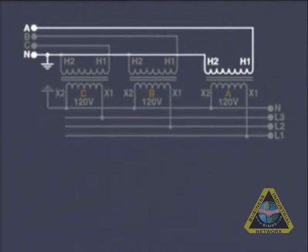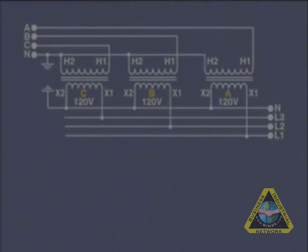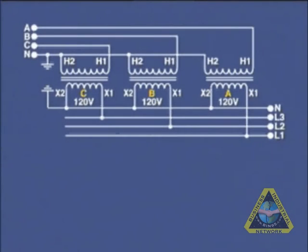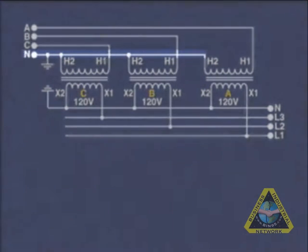From line B, we go to H1 of the second coil, through it to its H2, which also goes to neutral. Similarly, the C phase goes to H1 through the transformer coil H2 to neutral. As we can see, this representation is a Y connection with a neutral wire.